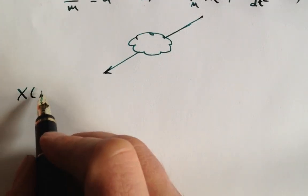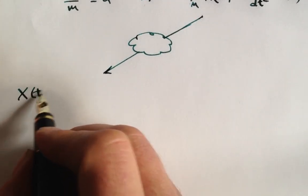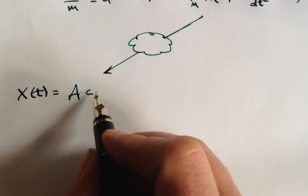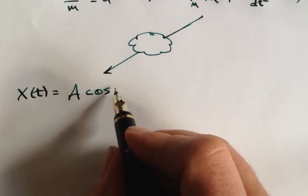Well, yes, either a sine or a cosine function will work. I'm going to pick cosine here because I know I'm going to start the system at an initial position away from equilibrium.